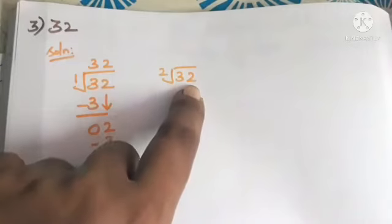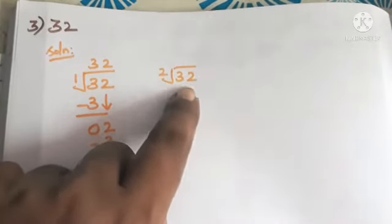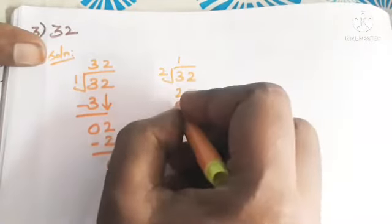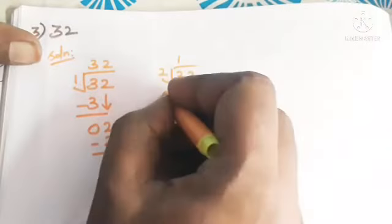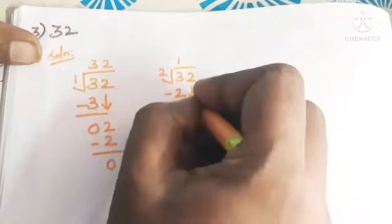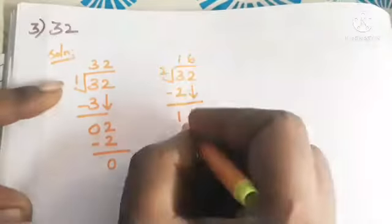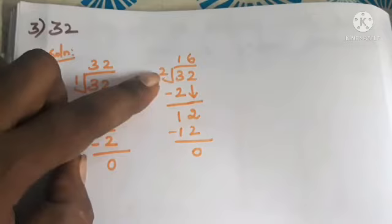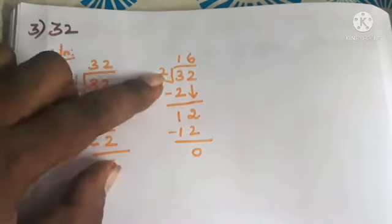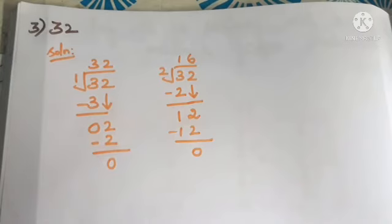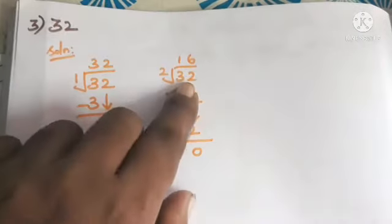Divide 32 by 2. The ones place is 2, which is even, so 32 is divisible by 2. In the tens place, one 2 is 2; 3 minus 2 is 1. Bring down 2 to get 12. Six 2s are 12; 12 minus 12 is 0. Remainder is 0, so 2 and 16 are factors of 32.